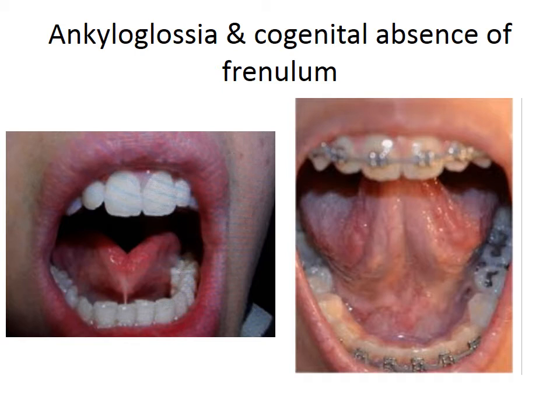Coming to ankyloglossia — the frenulum normally connects the undersurface of the posterior part of the tongue to the floor of the mouth. When the frenulum extends up to the tip of the tongue, it hampers the mobility of the tongue, making eating and speech difficult. This condition is called ankyloglossia, and it may require surgical correction.